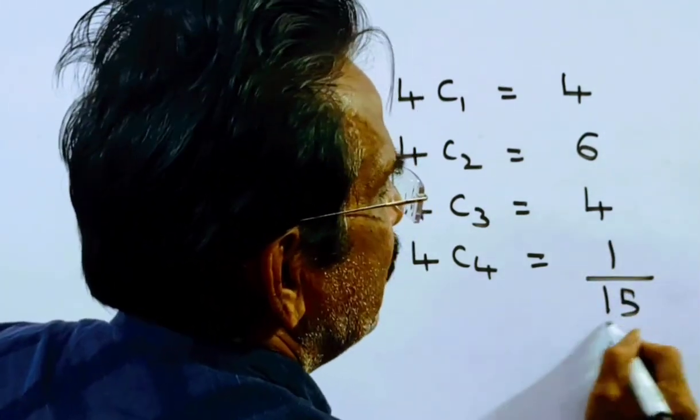So in total, he can make 15 different sums.